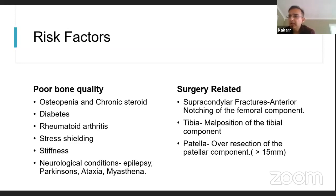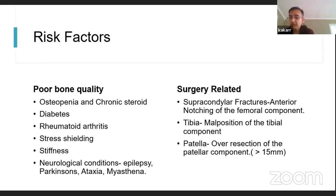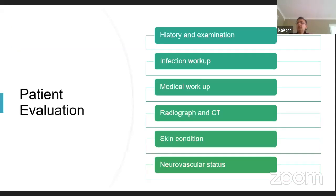Surgery-related risk factors include anterior notching for supracondylar fractures, although evidence is controversial and minimal. For tibial periprosthetic fractures, malposition of the tibial component is a factor. For patellar fractures, over-resection of the patella — taking off more than 15 millimeters — can cause intraoperative or postoperative patellar component fracture, which is why in the UK we have largely moved away from routine patellar resurfacing.